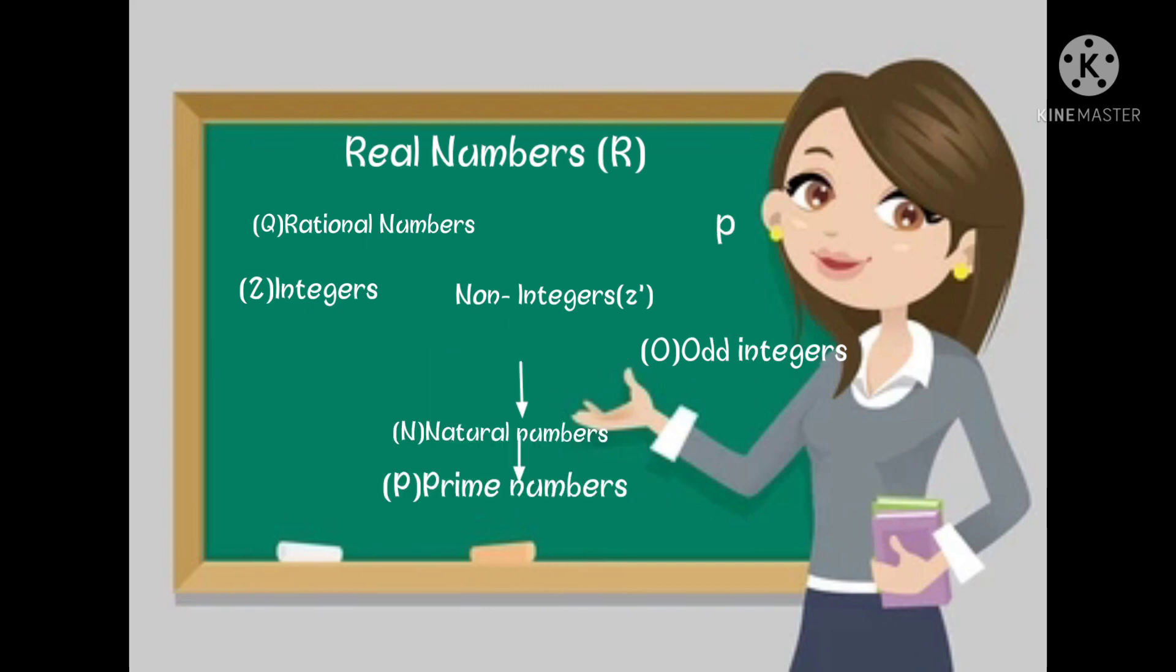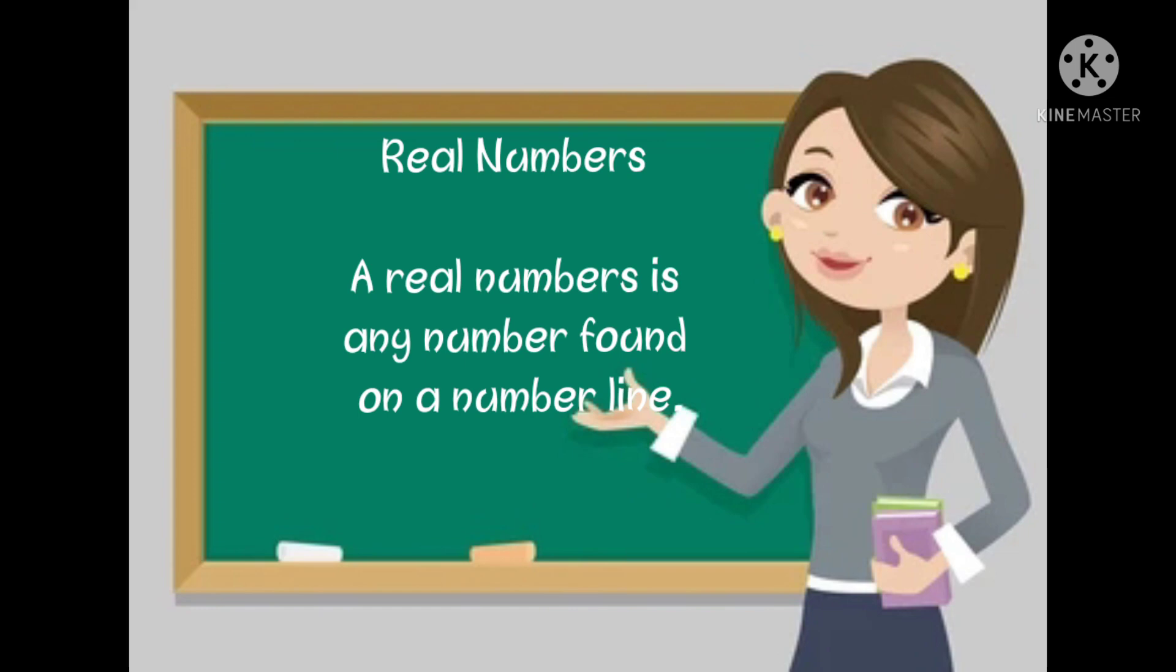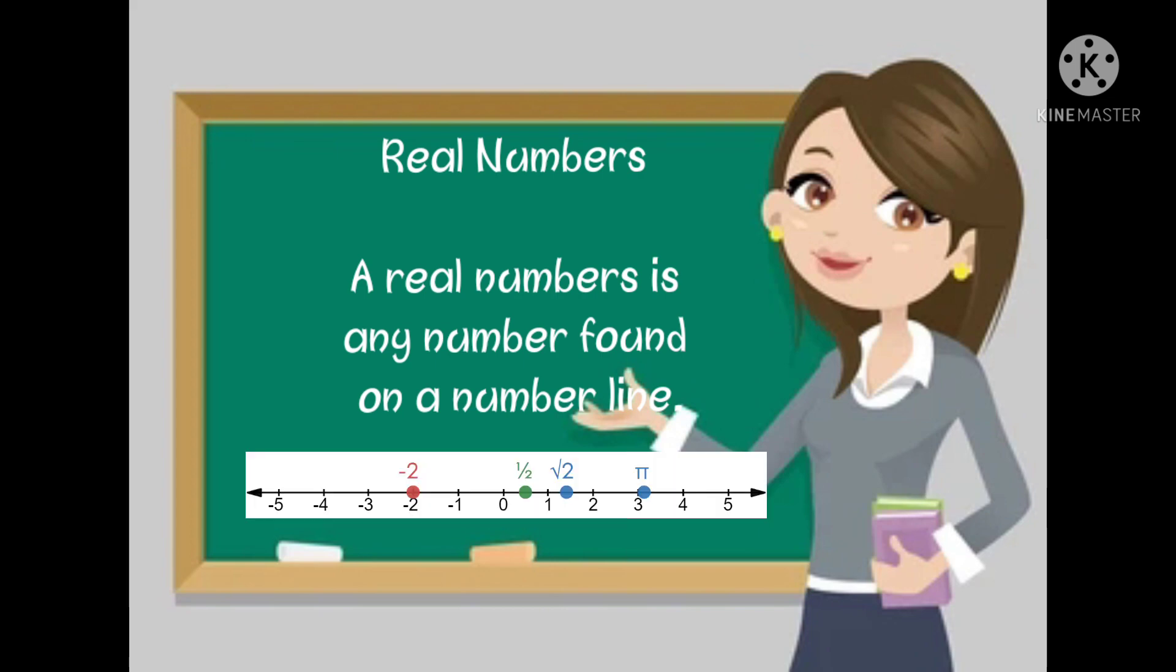Real numbers: A real number is any number found on a number line. Let's see the examples: -2, 1/2, √2, π, -5, -4, -3, -2, -1, 0, 1, 2, 3, 4, and 5. These all are real numbers.